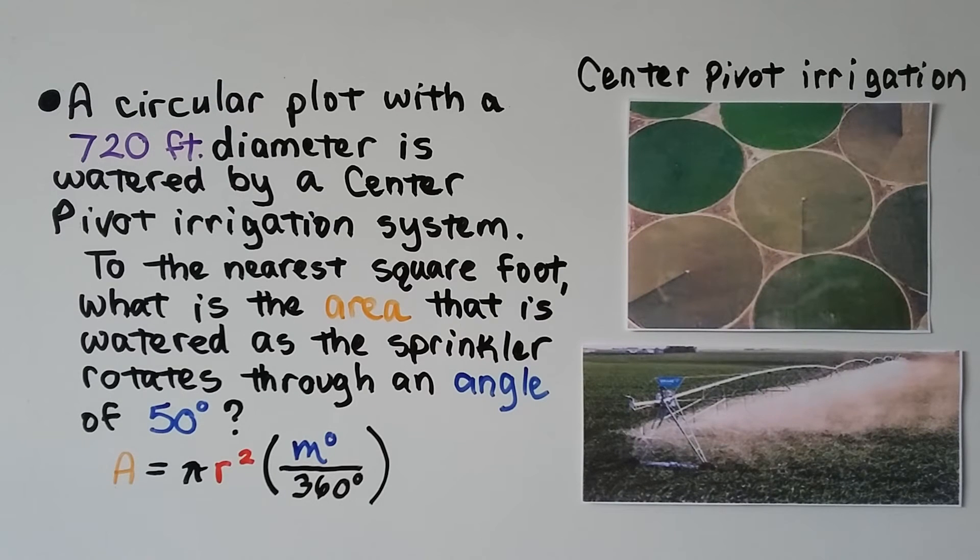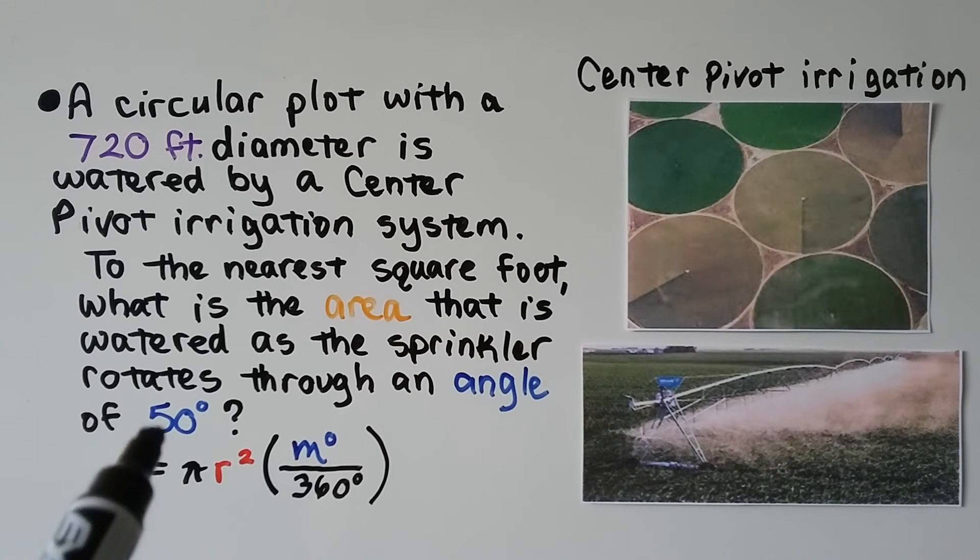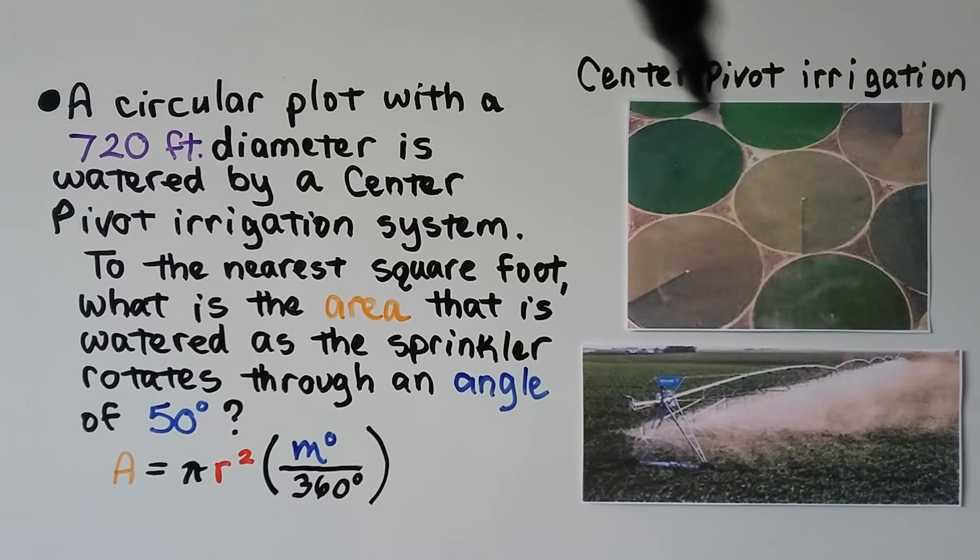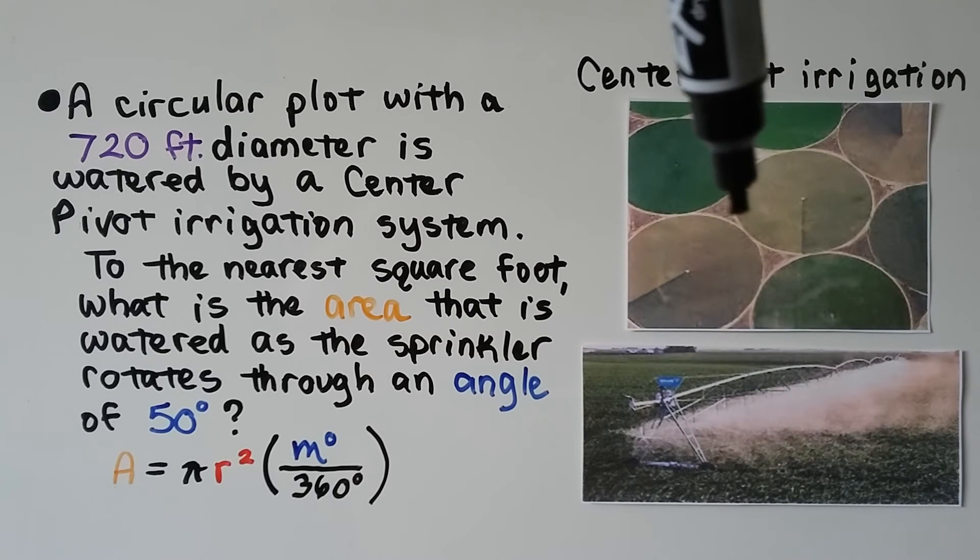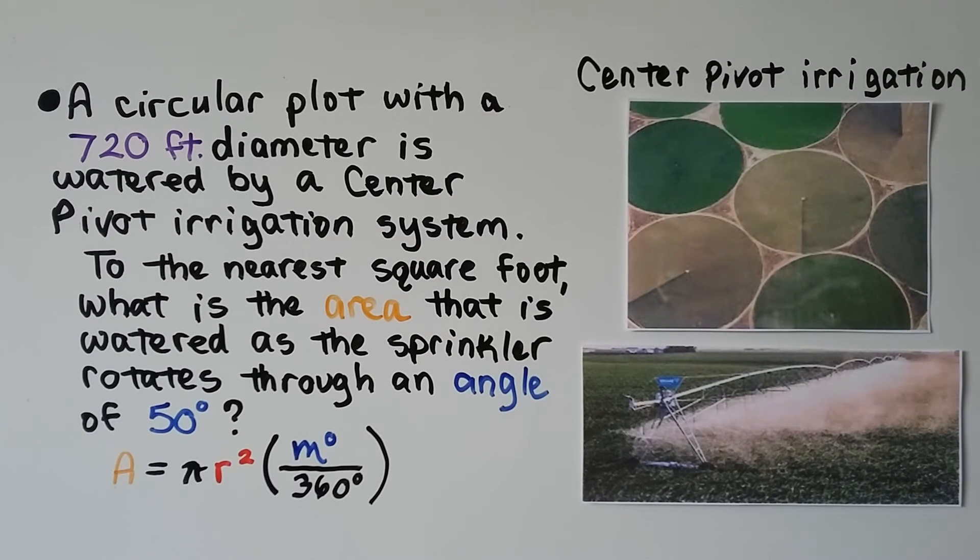A circular plot with a 720 foot diameter is watered by a center pivot irrigation system. To the nearest square foot, what is the area that the sprinkler can water as it rotates through an angle of 50 degrees? If it rotates 50 degrees like this, just a little piece of the circle, what's the area that it watered?